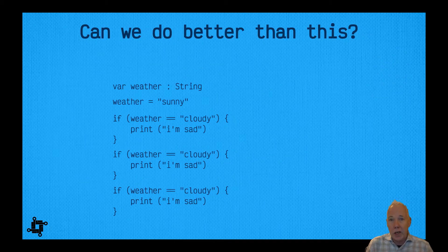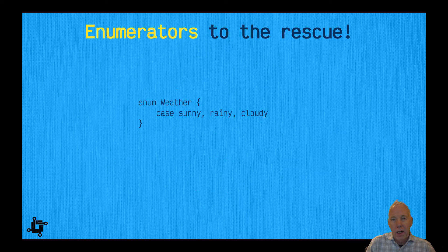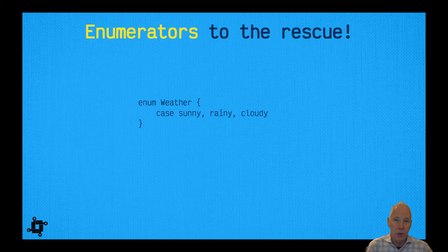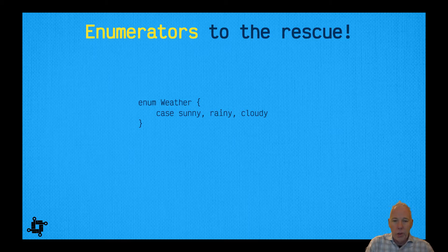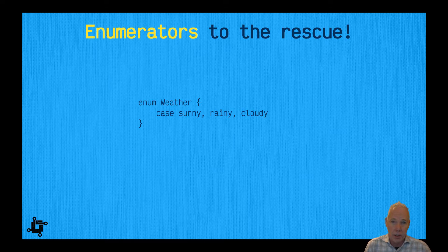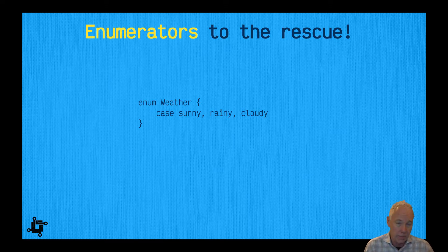We can do better than this — enumerators to the rescue. Enumeration types are going to allow us to do exactly what we were just doing, but in a much more reliable way. So let's look at this declaration — we've declared an enumeration type, which is a new type that will exist in the Swift language for our program.